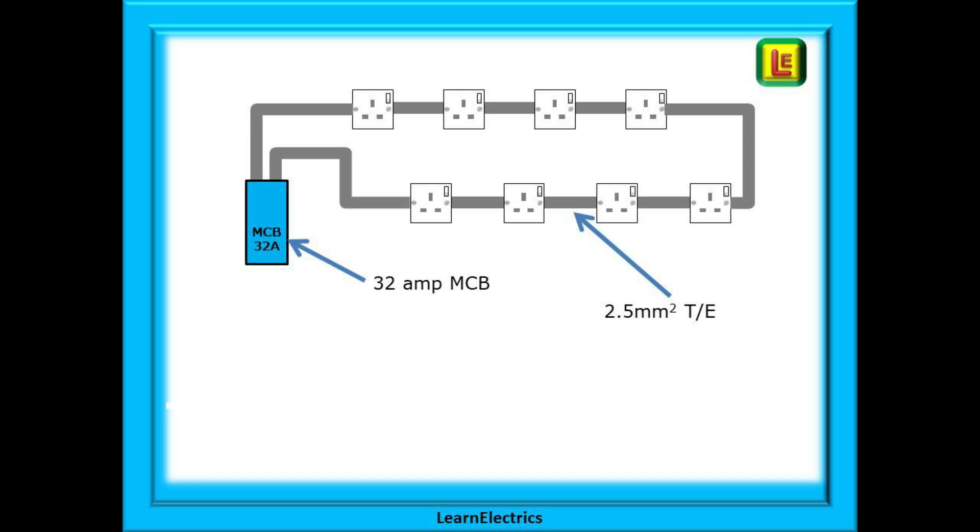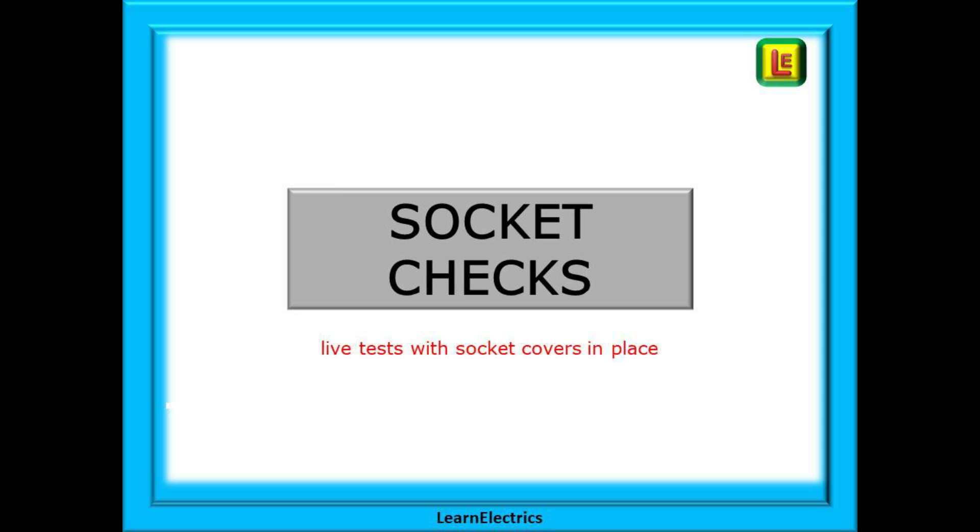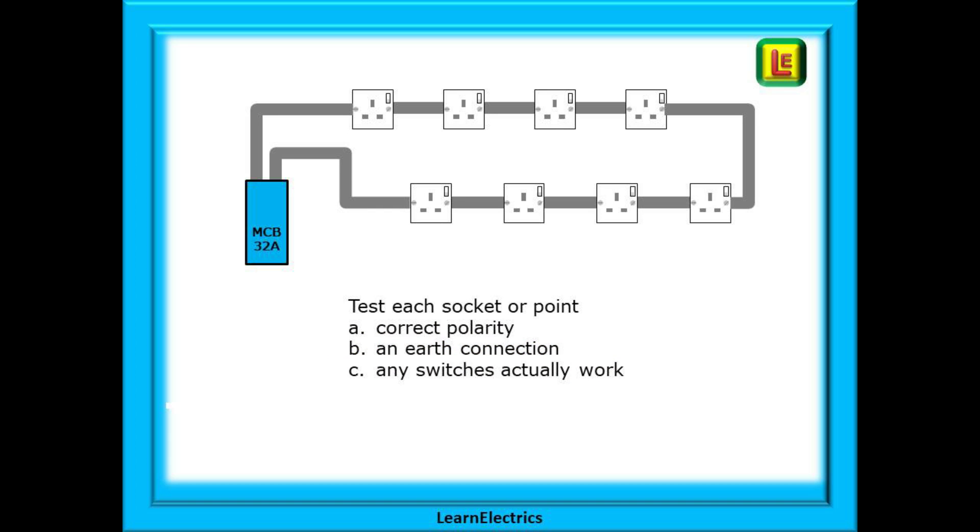A domestic ring circuit is normally wired in 2.5 millimeter twin and earth cable and protected by a 32 amp circuit breaker. To start with, we will check that the sockets are all functioning as they should. These are live tests and we will be keeping the socket covers on for the testing. We need to establish the state of things before we start dismantling. Checking the sockets can tell us a lot about the circuit, so let's begin. We will test each socket or point for correct polarity between live and neutral, check that there is an earth connection to the front of the socket, and that any switches actually work—that they do turn the phase voltage on and off.